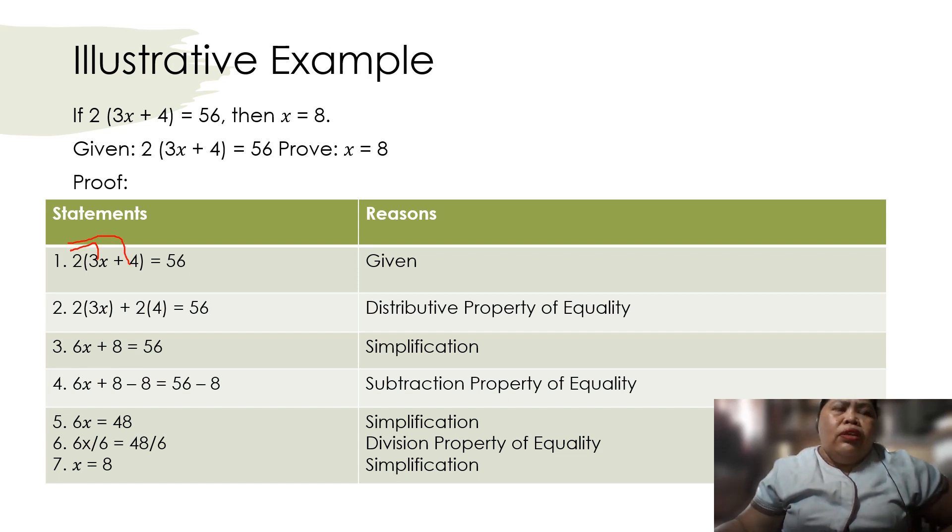And then, simplification. So we have 2 times 3x is 6x, 2 times 4 is 8, so it's 6x plus 8 equals 56. Then apply the subtraction property of equality. We subtract 8. 56 minus 8 is 48, so simplification gives us 6x equals 48. Then divide both sides by 6, so 6x divided by 6 is x. 48 divided by 6 is 8, so that's division property of equality. And then after simplification, you get your final answer which is 8.